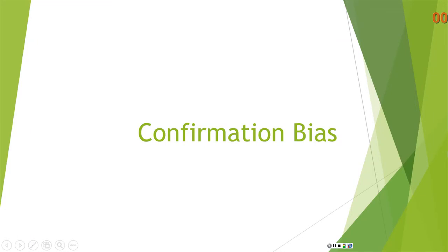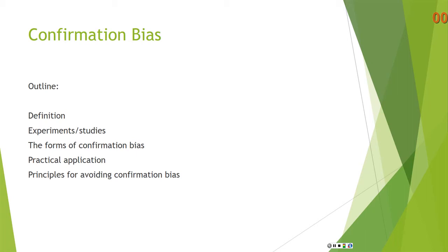Welcome to the lecture on confirmation bias. Here's an outline. I'll give a definition of confirmation bias with some explanation and examples. I'll present some experiments or studies that confirm that people do tend to engage in confirmation bias, look at the forms of confirmation bias, some practical application, and then I'll leave you with some principles for avoiding confirmation bias.